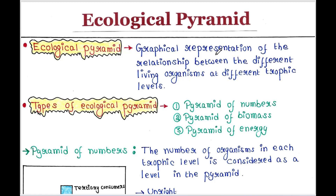The graphical representation of the relationship between the different living organisms at different trophic levels is called the ecological pyramid.